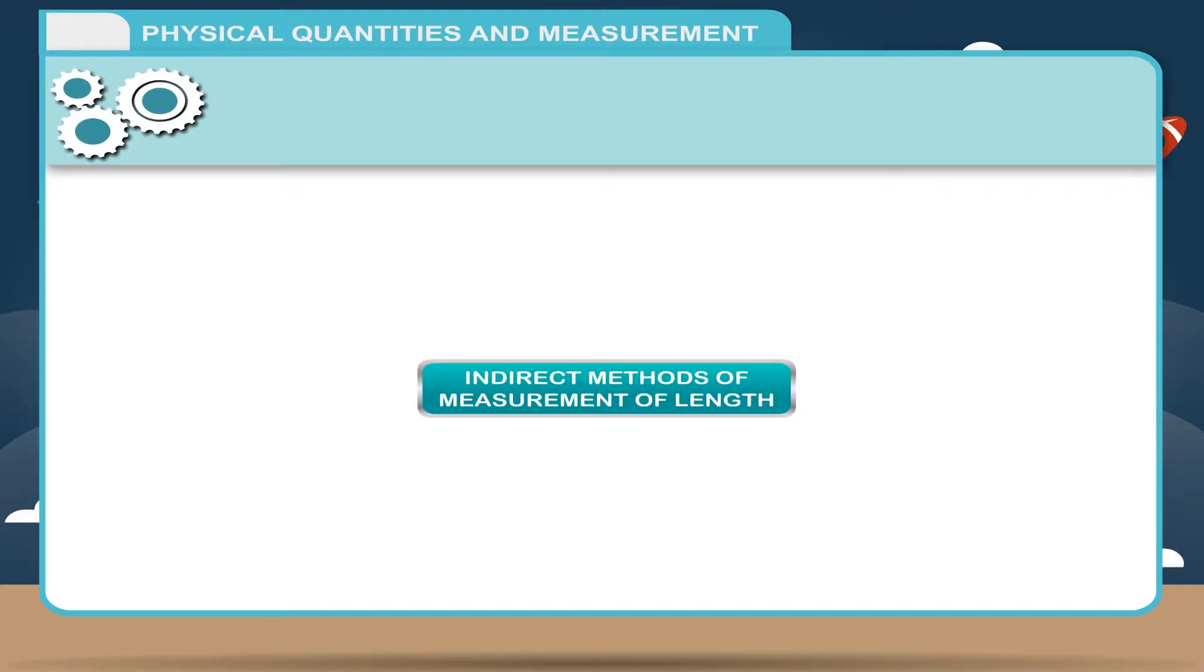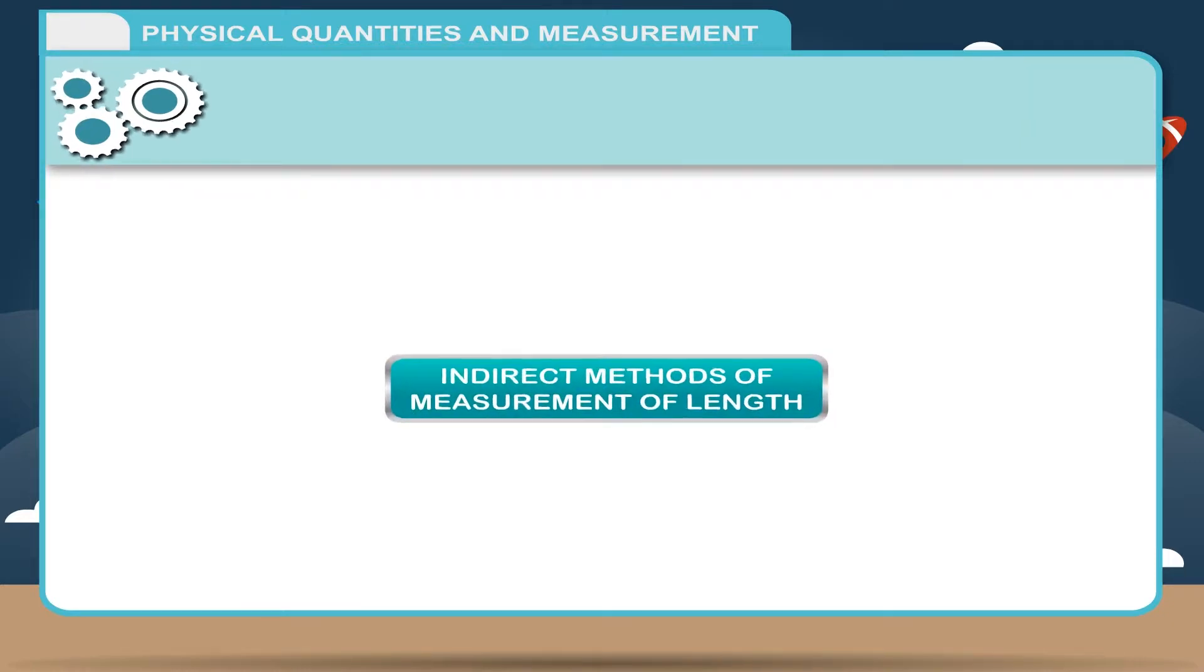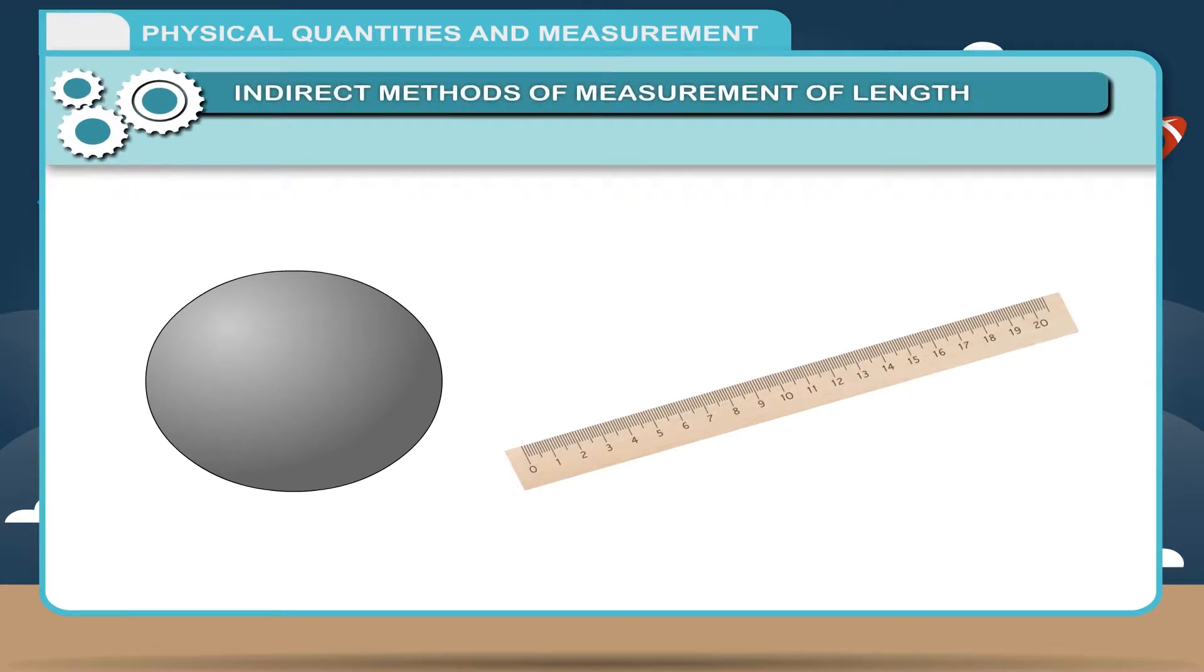Indirect Methods of Measurement of Length. A ruler cannot be used to measure the circumference of a cylinder because the circumference is a curved surface and a ruler is a straight rigid object. Therefore, we cannot bend the ruler around a curved object.